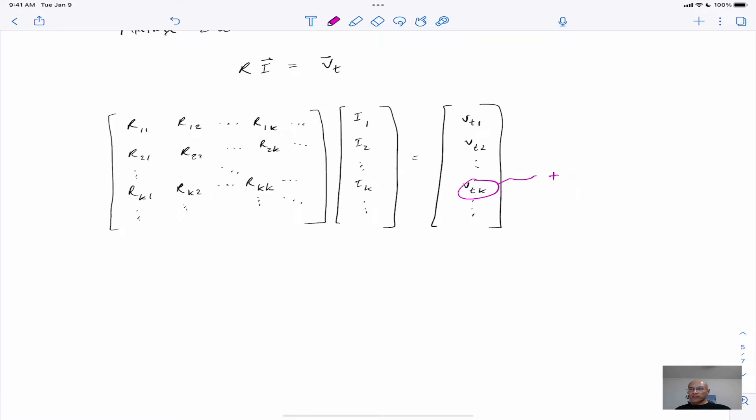And this is the total voltage rise around the kth loop. So remember, this is in the direction of IK, so we're tracking voltage rises, and signs and directions matter. And then, of course, these are the mesh currents.